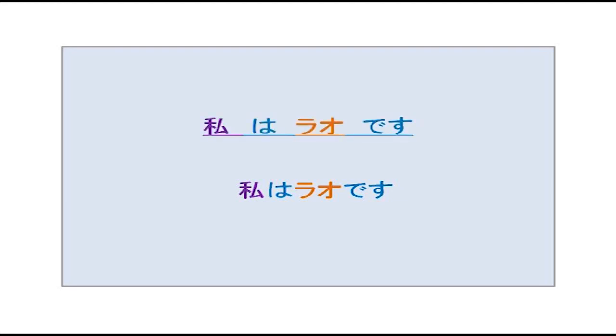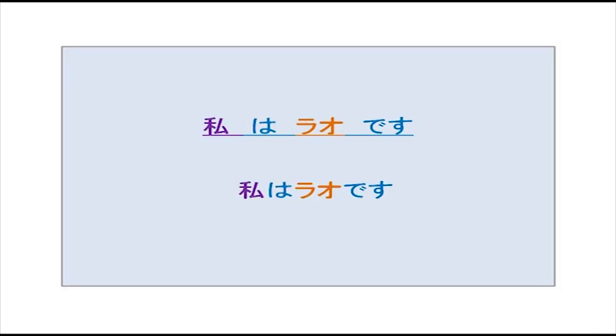We are used to spaces between words, but the Japanese have no problem reading text without spaces. Why? Because you have kanji — the pictogram — hiragana in blue, and then katakana in orange. So without even spacing, it is very, very clear.